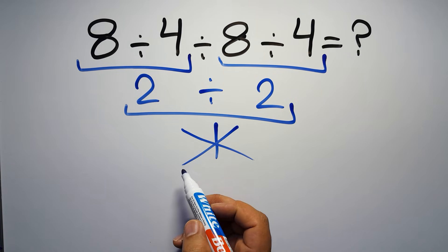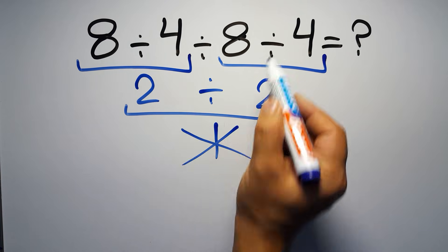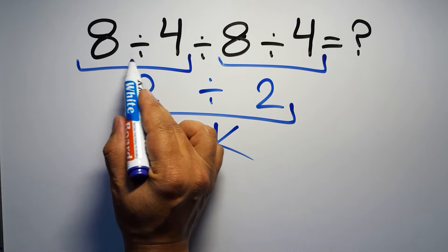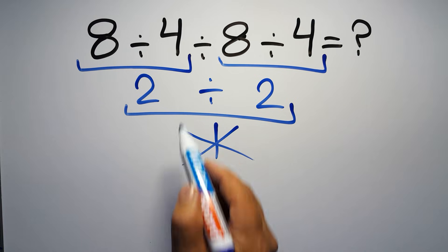because according to the order of operations, when we have more than one division in an expression, we have to work from left to right, so here first we have to do this division, then this division